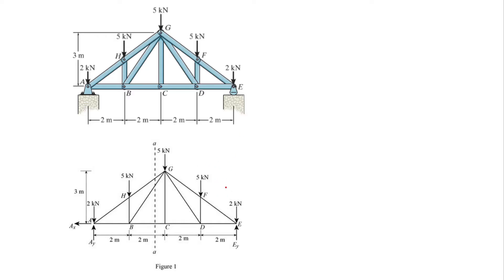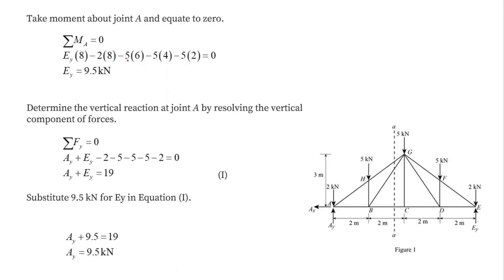All the forces — 5 kN, 5 kN, 2 kN, 2.5 kN, and 2 kN — are acting in the downward direction, so we take them as negative. Applying the condition of equilibrium, we take the moment about point A equal to zero. The force Ey multiplied by its perpendicular distance from A, which is 2+2+2+2 = 8 meters, acts in the anti-clockwise direction (positive). All other forces produce clockwise moments (negative). Solving, the value of Ey comes out to be 9.5 kN.